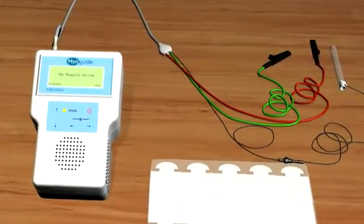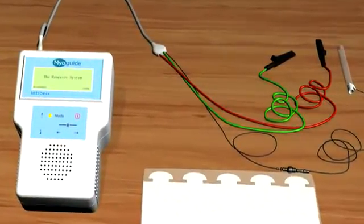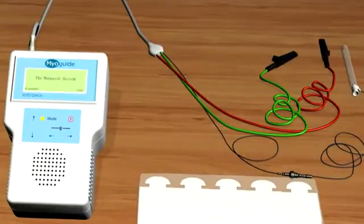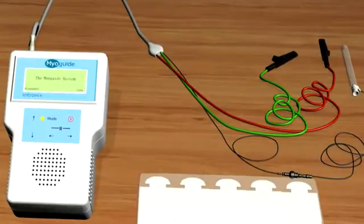In order to get started with the injection procedure utilizing EMG, a treating physician will need Myoguide, the electrodes, including ground and reference electrodes, as well as a hypodermic needle electrode to which the syringe attaches.